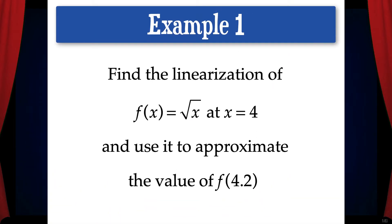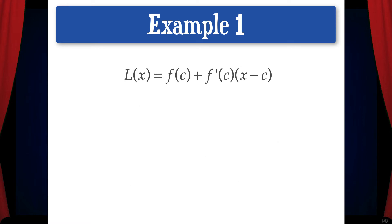Let's do an example problem. Find the linearization of f of x equals the square root of x at x equals 4 and use it to approximate the value of f of 4.2. To do this, we'll start with the general linearization equation: L of x equals f of c plus f prime of c times x minus c. F of x equals radical x and c equals 4.